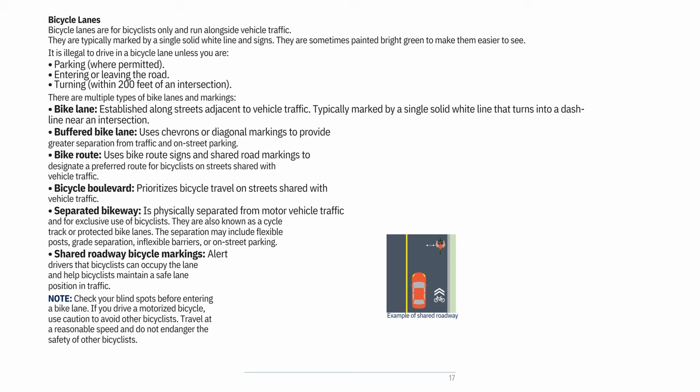Separated bikeway: physically separated from motor vehicle traffic for exclusive use of bicyclists — also known as a cycle track or protected bike lane. Separation may include flexible posts, grade separation, inflexible barriers, or on-street parking. Shared roadway bicycle markings: alert drivers that bicyclists can occupy the lane and help bicyclists maintain a safe lane position. Note: Check your blind spots before entering a bike lane. If you drive a motorized bicycle, use caution, travel at a reasonable speed, and do not endanger other bicyclists.